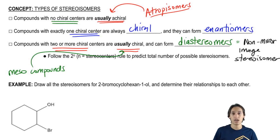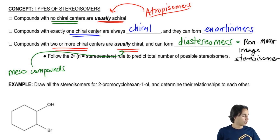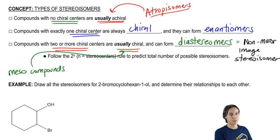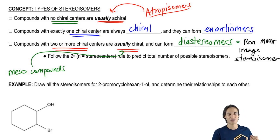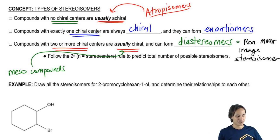We're going to talk about the differences between enantiomers and diastereomers in a second. By the way, sometimes it's really fun to hear your professor say 'diastereomers' because there are so many different pronunciations, and a lot of them have to do with foreign accents — it's kind of funny.